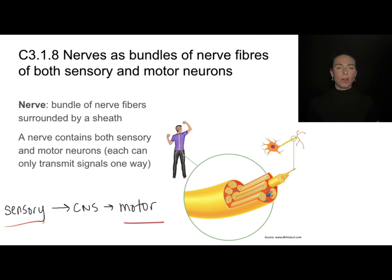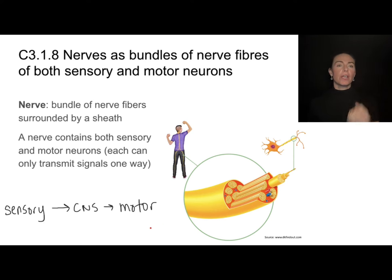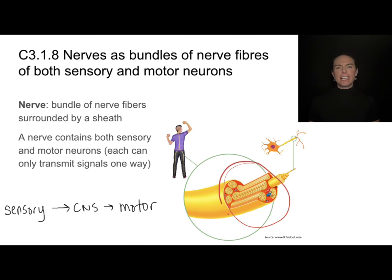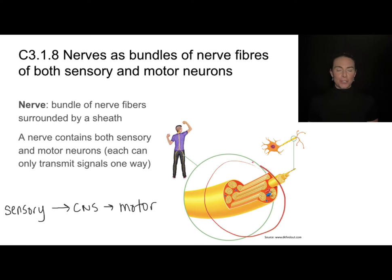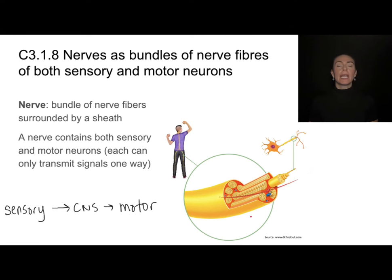Both sensory and motor neurons are contained within a nerve. A nerve is a bundle of nerve fibers surrounded by a sheath. Nerves have names like the sciatic nerve, axillary nerve, and cranial nerves. Remember, nerves aren't just one neuron — they contain several types of neurons, including sensory neurons carrying information to the brain and motor neurons carrying information from the brain.